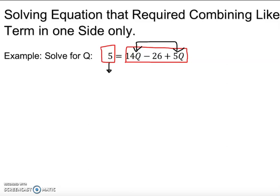So I am going to drop down 5 equal to 14Q plus 5Q which is 19Q, or 14 queen plus 5 queen is 19 queen minus 26.